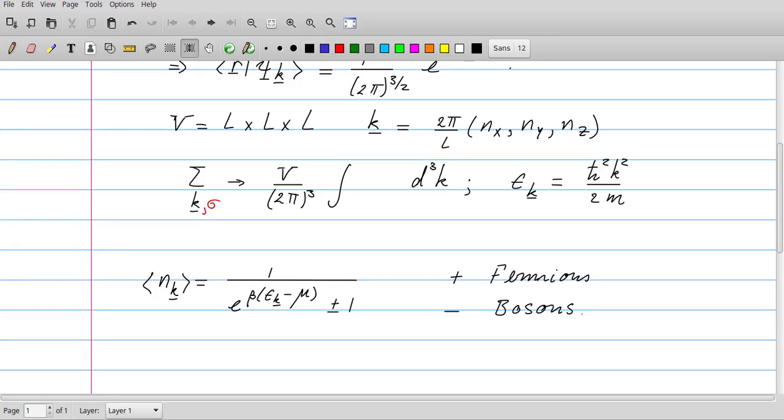In a previous movie we have seen that the average occupation of a level is given by the Fermi-Dirac or the Bose-Einstein distribution, depending on whether the particles are fermions or bosons. Here is that distribution: it's 1 over e^(β(εk - μ)) ± 1, where the plus sign corresponds to fermions and the minus sign to bosons.